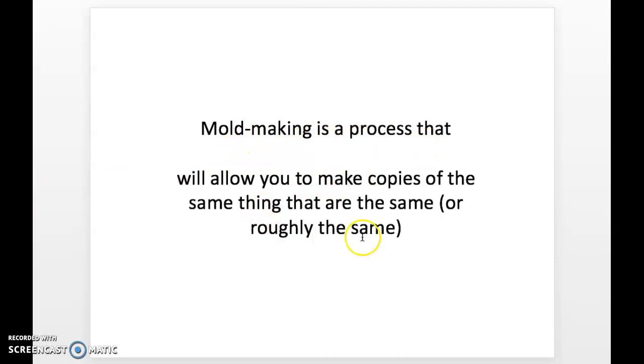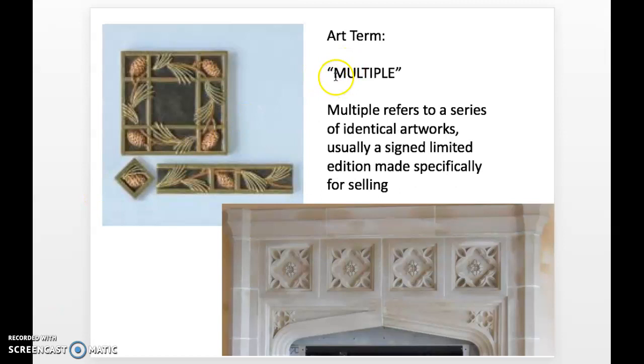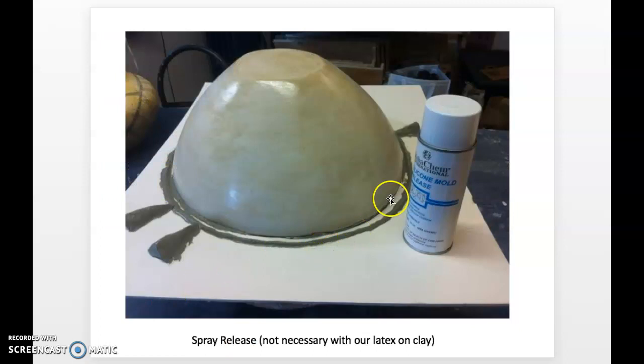Mold making is a process that will allow you to make copies of a thing that are roughly the same or the same. Multiple means a series of identical artworks. They're often assigned limited edition for selling. In your project, you're going to be making an original pattern, they call it, out of the clay. You're going to carve into it and build it up with clay like you did the mask, but it'll be flat on the back.